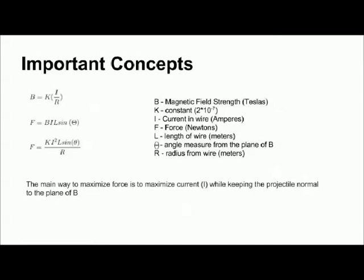In terms of formulas and exact numbers, the most important concepts of basic railguns are shown here. First is the equation for magnetic field strength generated by a wire. Second is the formula for force on a current in a magnetic field.